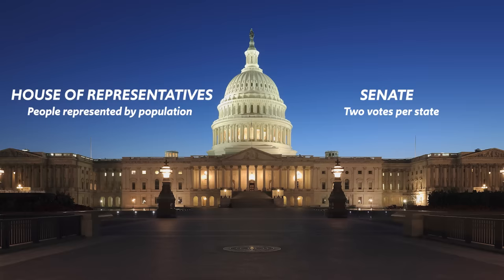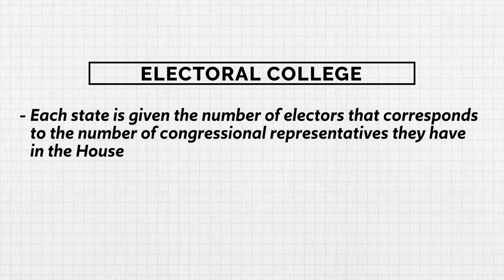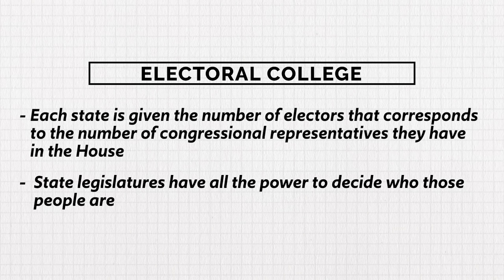The solution was the creation of a bicameral Congress — two houses. In the House of Representatives the people would be represented by population, and in the Senate the states would be represented equally with two votes per state. Another compromise was on how the president would be elected. Various delegates argued the people should elect the president, others argued the states should, and still others that Congress should. The compromise was the Electoral College.